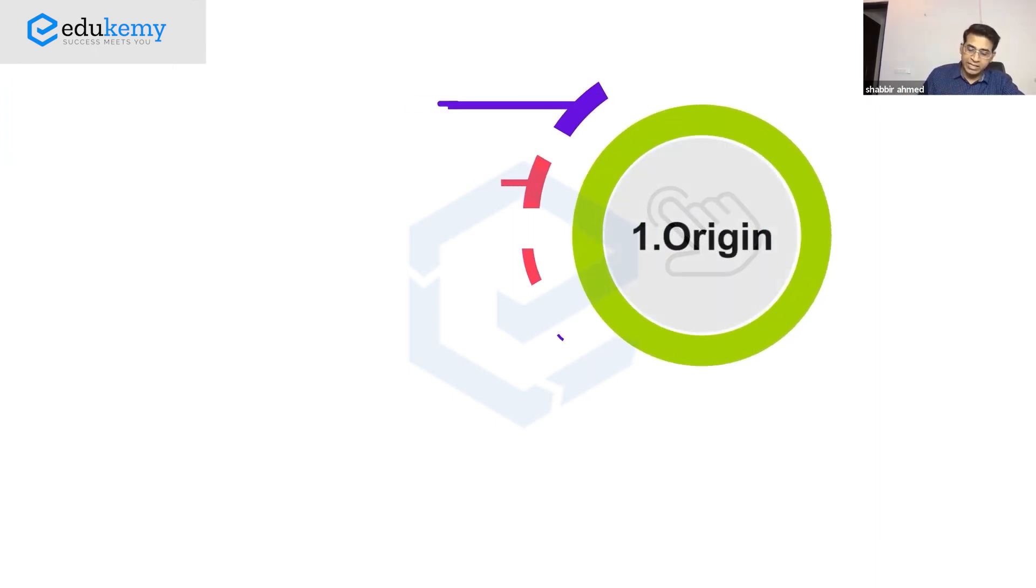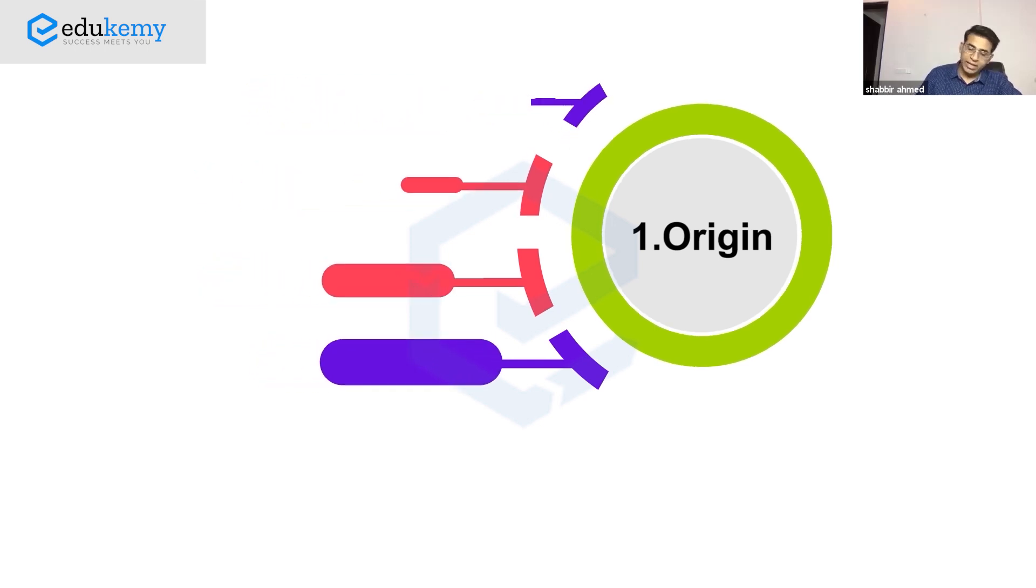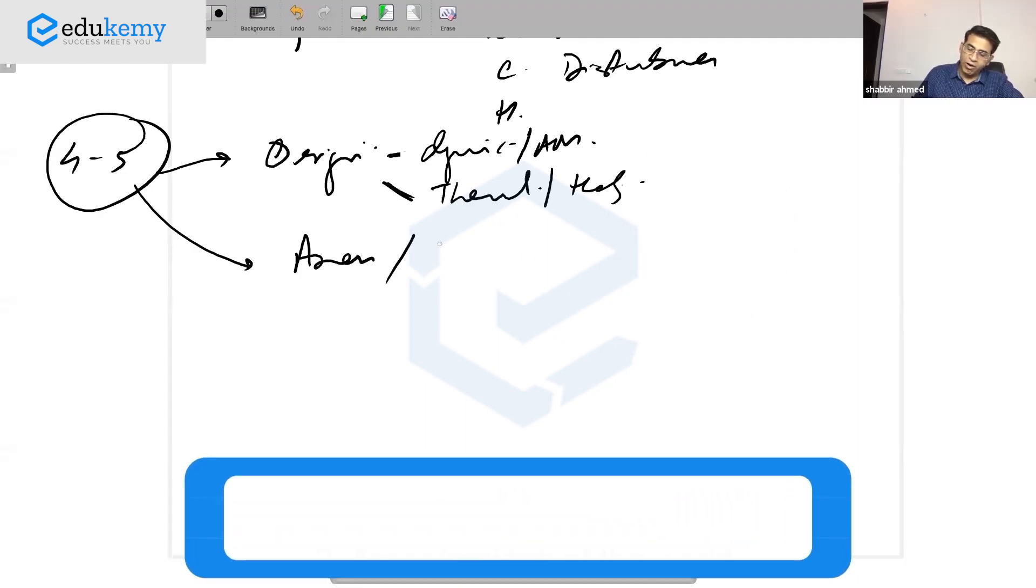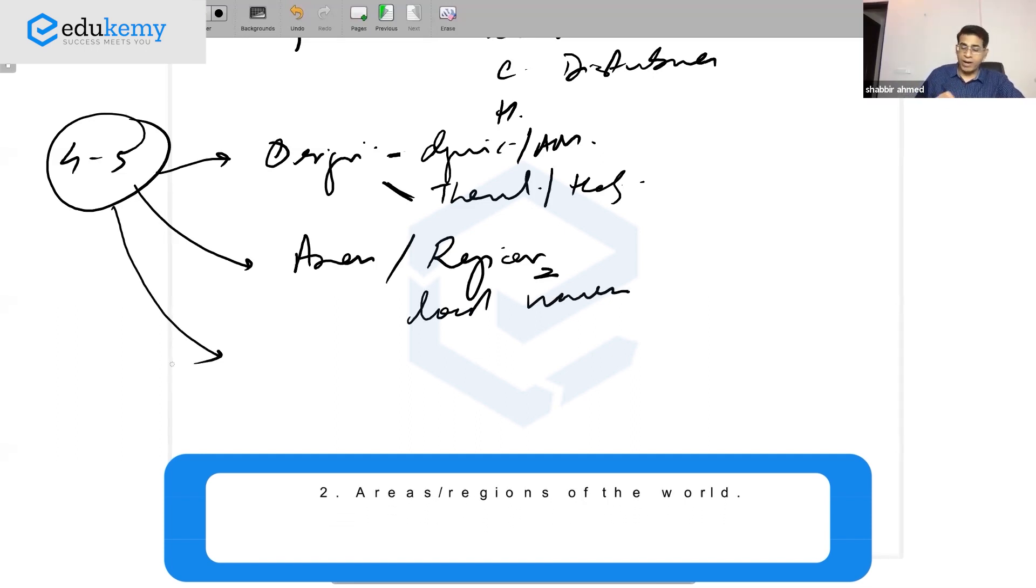Always discuss the origin: is it dynamic origin, thermal origin, is it related to air masses, or is it because of intense heating? Talk about that, then discuss the areas or regions of the world.